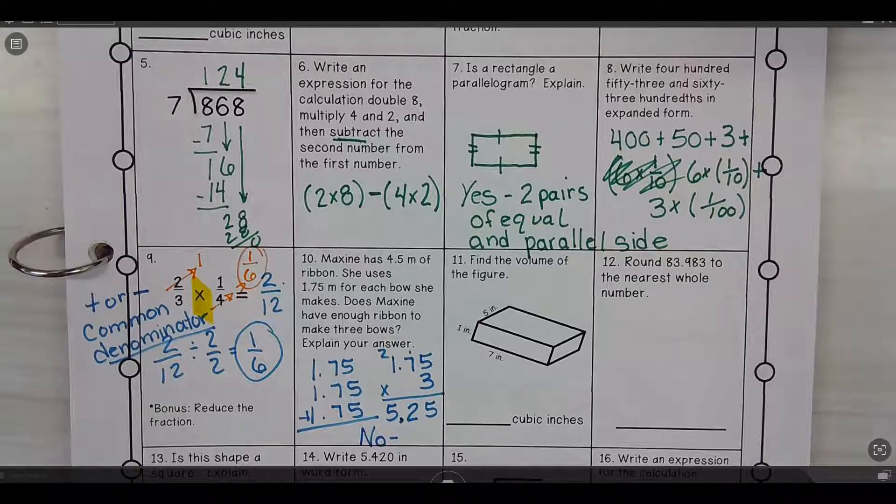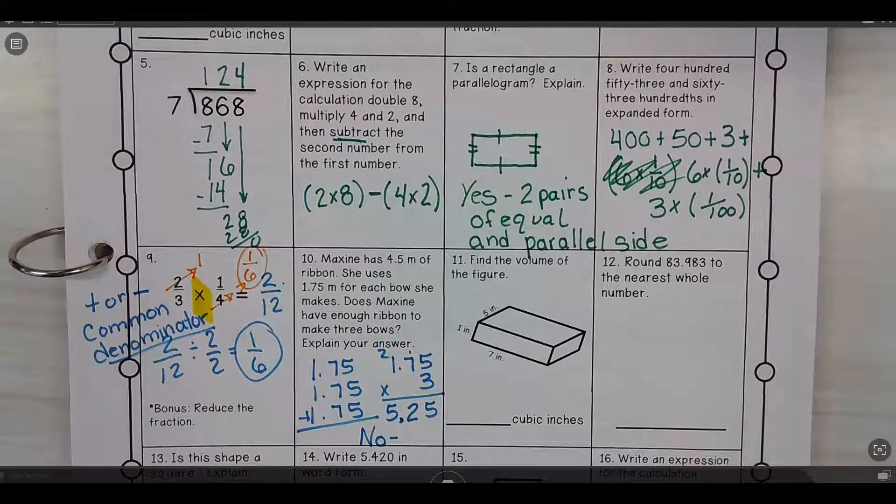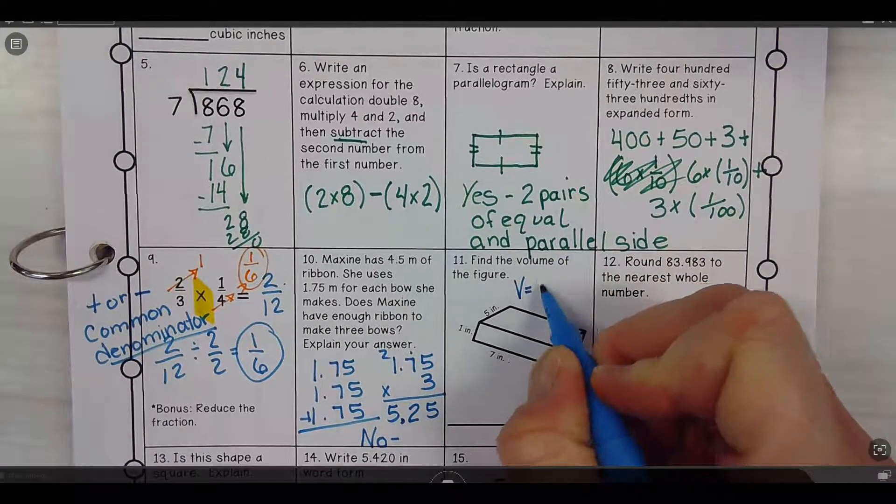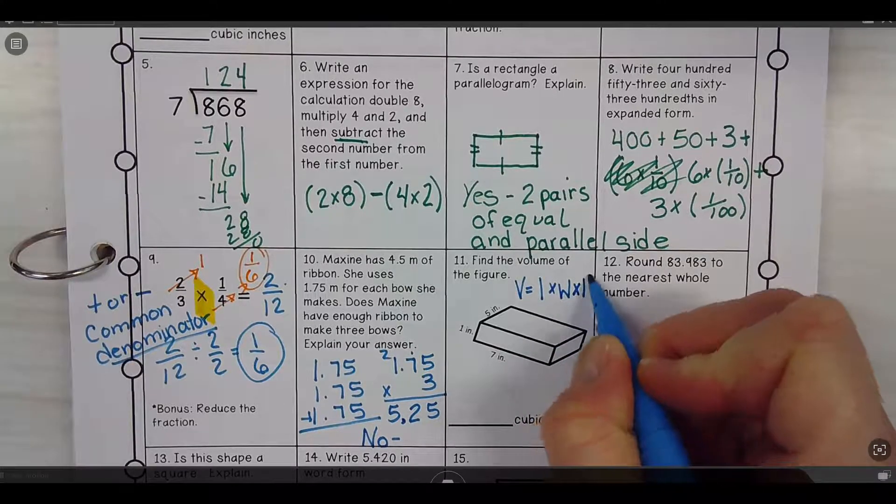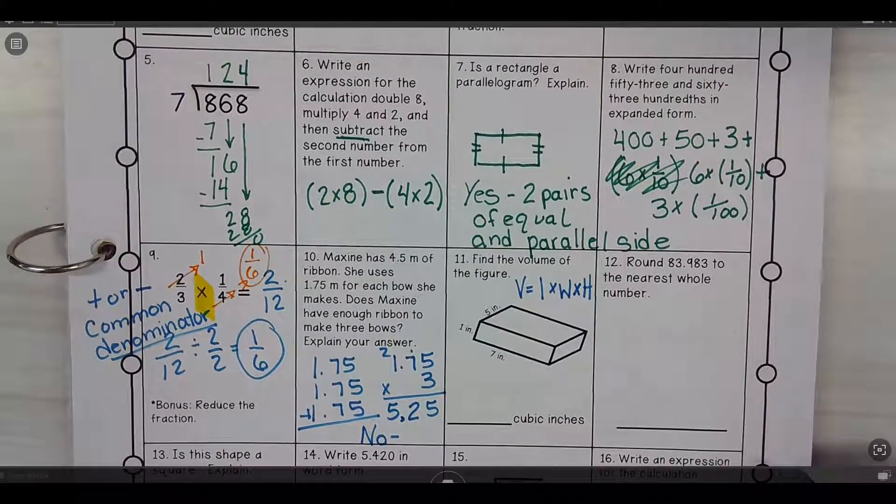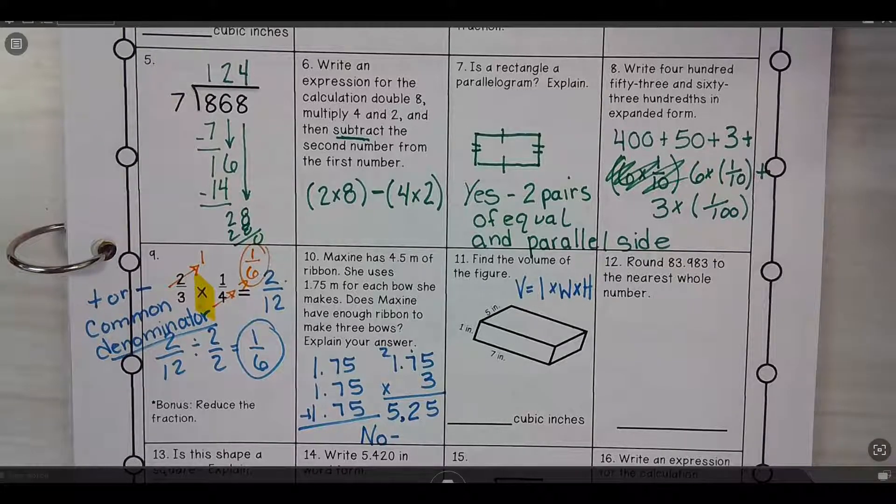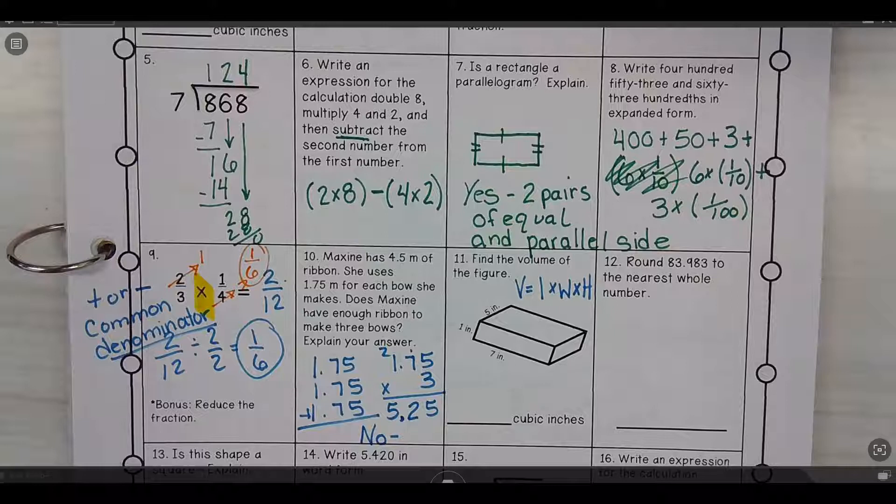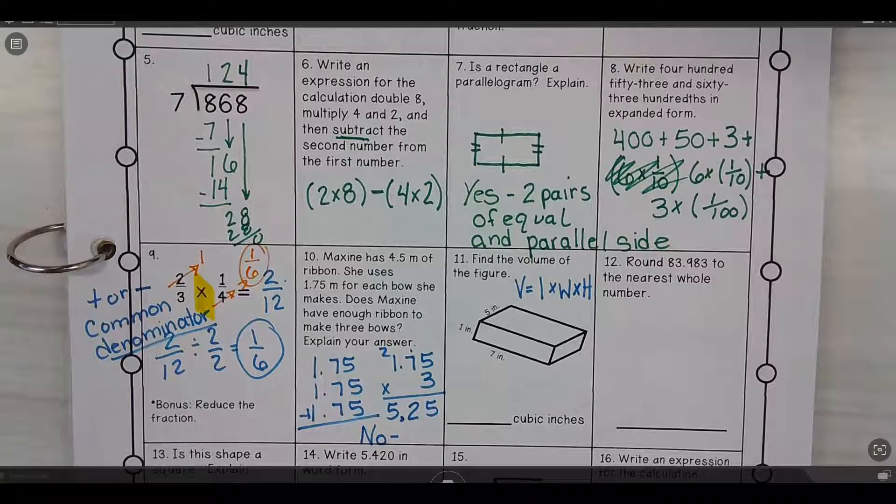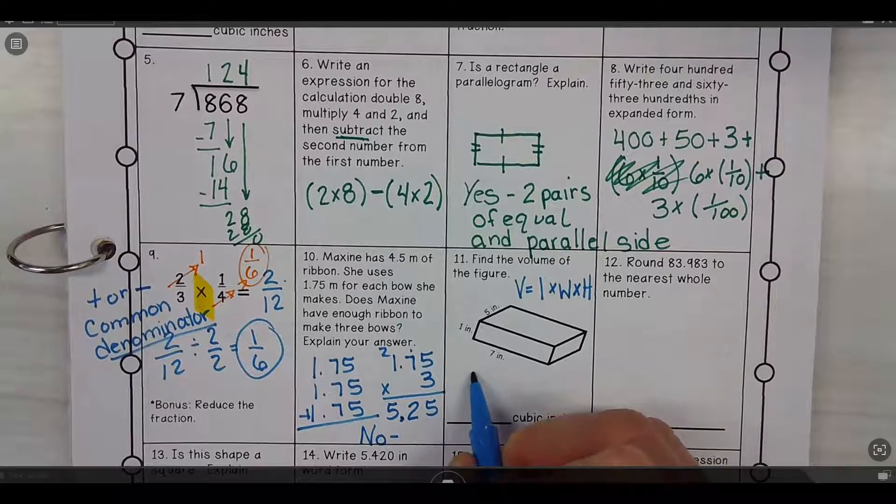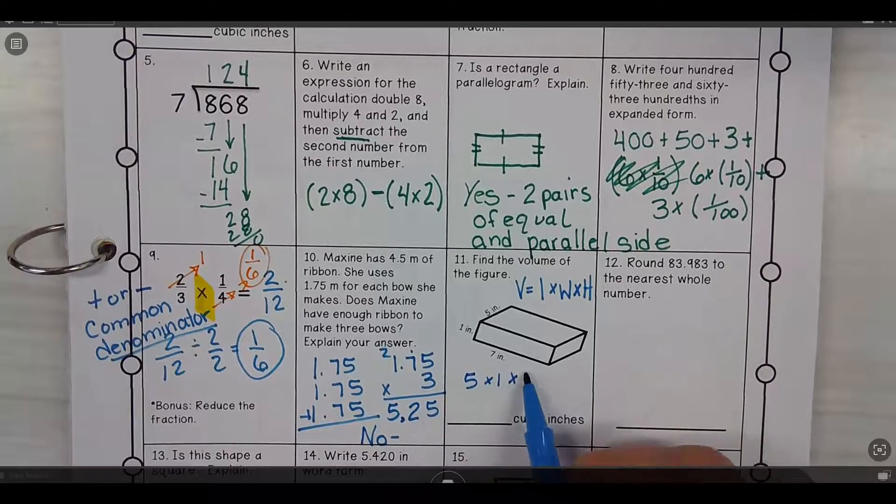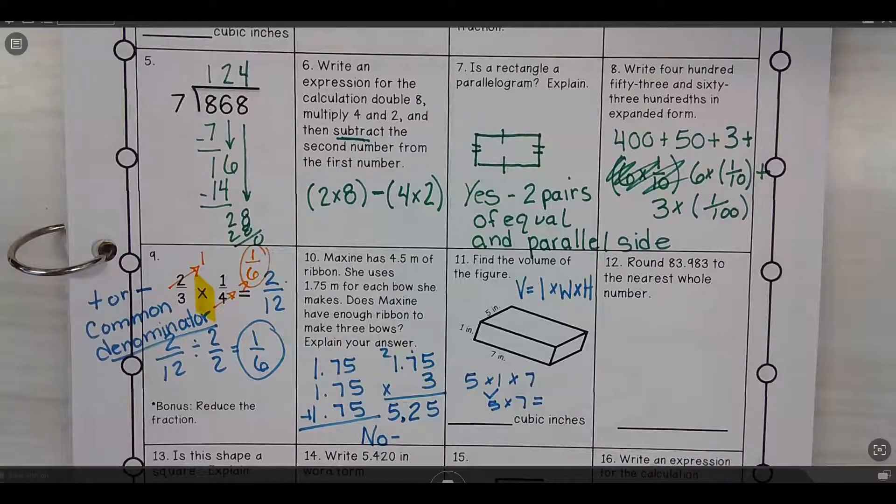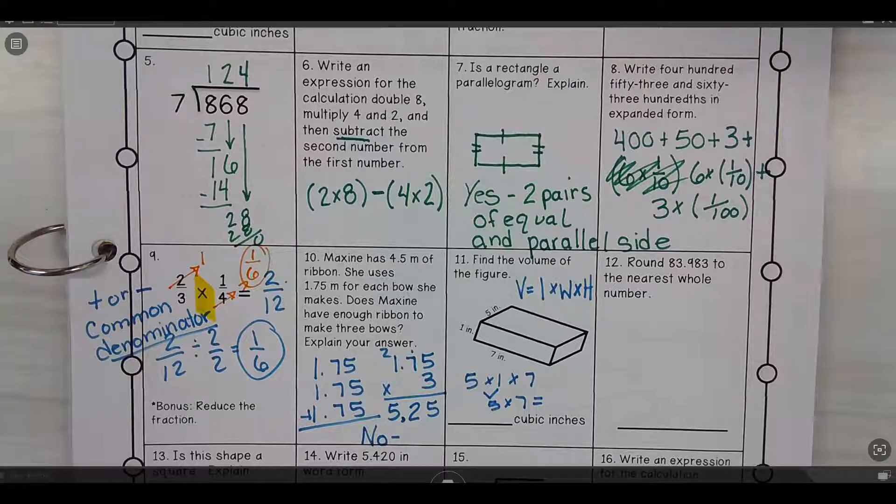To find the volume of the figure, how am I going to find the volume of the figure? You find the volume of the figure is length times width times height is your volume. So, five times one, or one times five, which is five. Then, five times seven. Thirty-five. Nicely done.